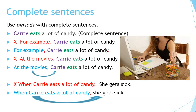Complete sentences: use periods with complete sentences. For example, 'Carrie eats a lot of candy.' This is a complete sentence. On its own, 'For example' is not a complete sentence.